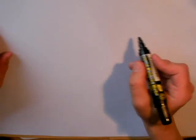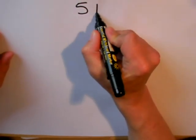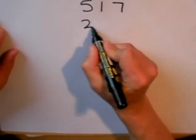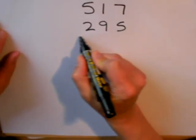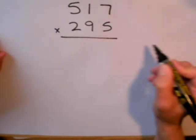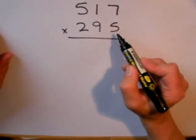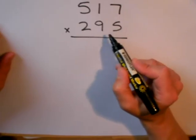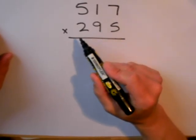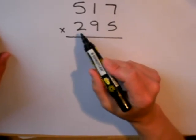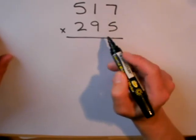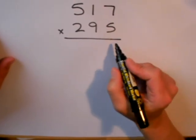Finally, I'm going to show you an example of a three-digit number multiplied by another three-digit number. 517 multiplied by 295. I'm going to start by multiplying by the 5, then multiplying by the 9, and then multiplying by the 2. I must remember to put the 0s down to make sure my answers are in the correct place.